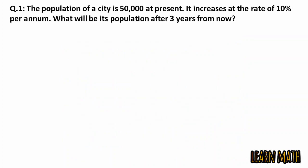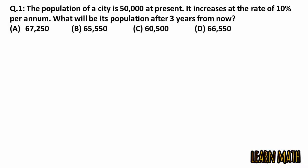The first question is: the population of a city is 50,000 at present. It increases at the rate of 10% per annum. What will be its population after 3 years from now? These are the 4 given options.